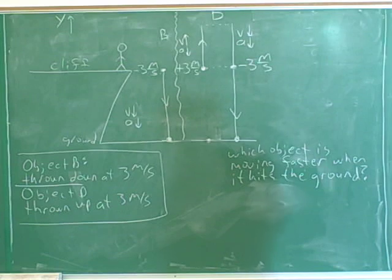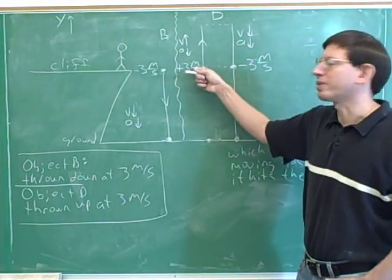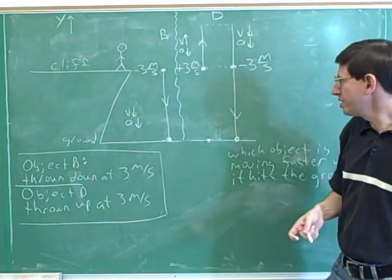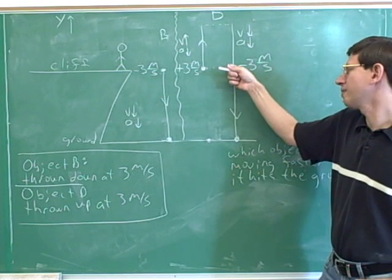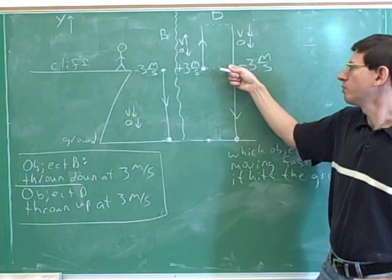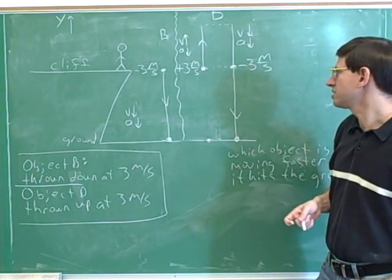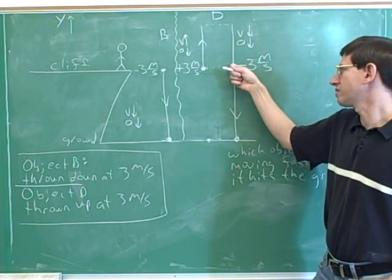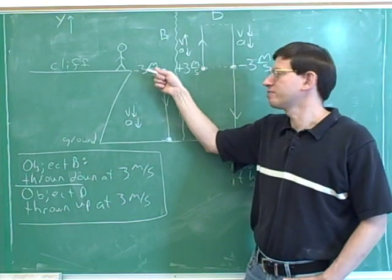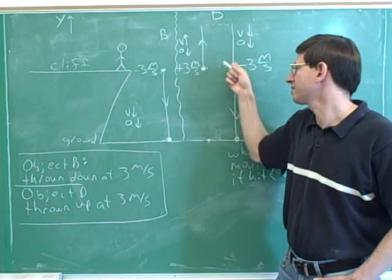The key was to use the symmetry of projectile motion. Originally object D was moving up at three meters per second, but that portion of the path doesn't really concern us. What really concerns us is what's happening to object D when it's moving on its downward path. When it's at the height of the cliff, object D is moving at three meters per second downwards — and that's the same speed that object B was moving at when it was at the height of the cliff.